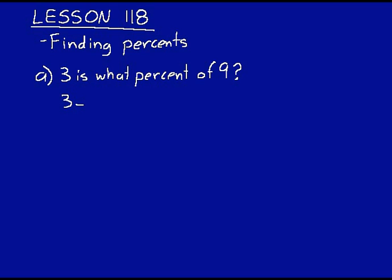3 equals what percent? That's what we don't know. So let's just put a letter there to indicate that value. We'll just say P times 9. Because 'of' indicates multiplication. 3 equals P times 9.